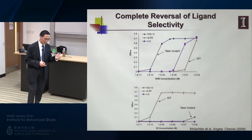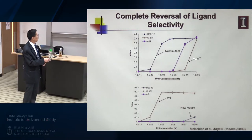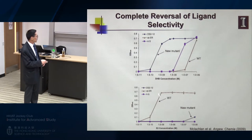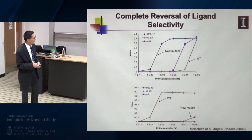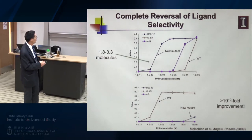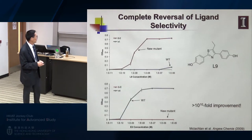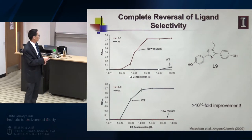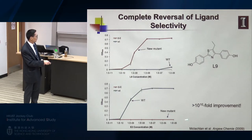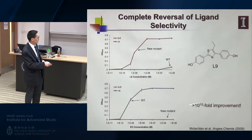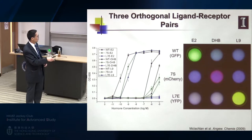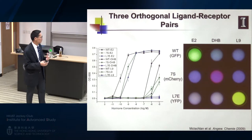We continued to improve the sensitivity and showed we can completely switch the dose-response curve: the mutant can now respond to the synthetic ligand at subnanomolar concentrations and barely show any response towards estradiol. Calculations show it only requires a few molecules to turn on gene expression. We applied the same approach to another structurally different compound and created three orthogonal ligand-receptor pairs that work independently without interference.